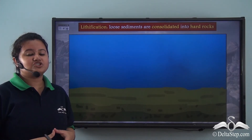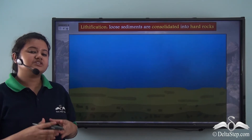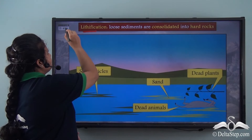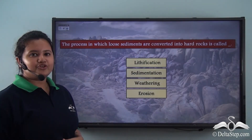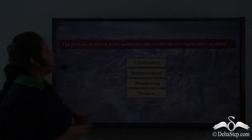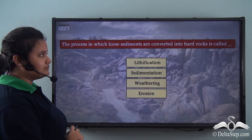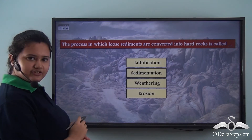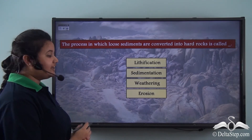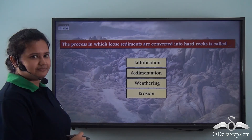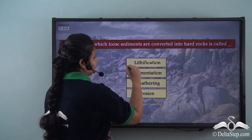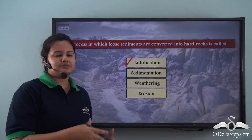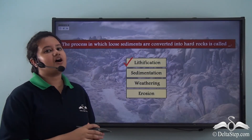The process in which loose sediments are converted into hard rocks is called lithification. Can you help me answer this? The process in which loose sediments are converted into hard rocks is called: lithification, sedimentation, weathering, or erosion? The correct answer is lithification, because lithification is the process in which loose sediments are consolidated into hard rocks.